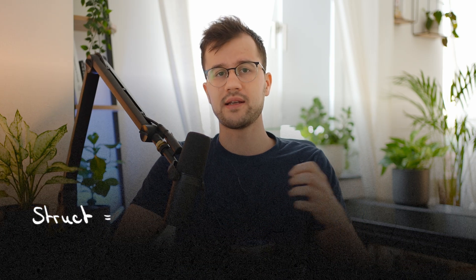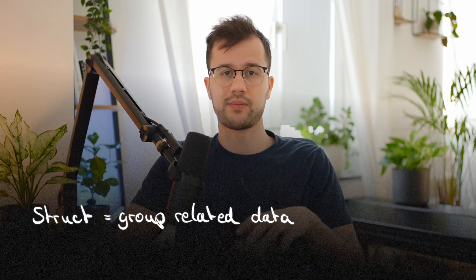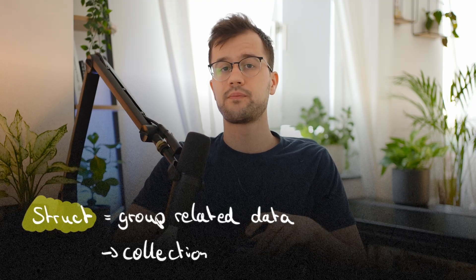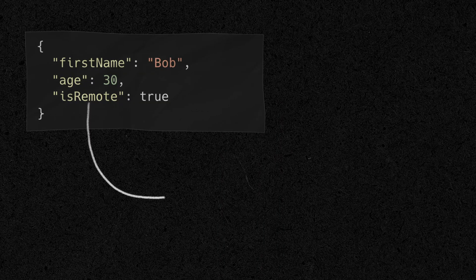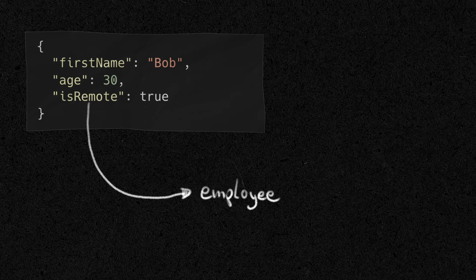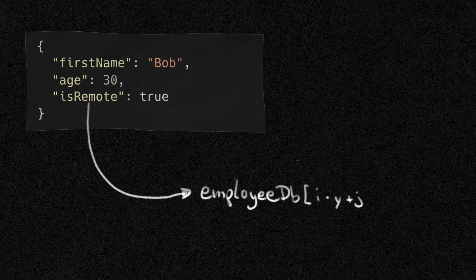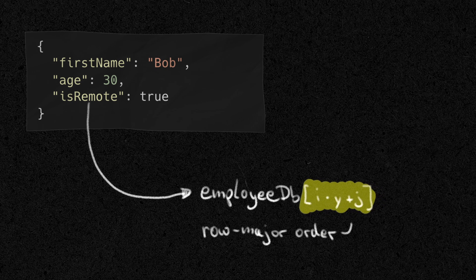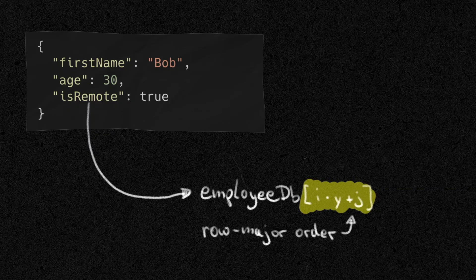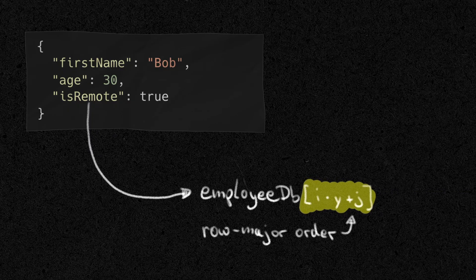The main idea of structs in general is to just group related data together in one data type, so that you only have one single thing that is basically a collection of fields. For example, if you have an employee database, you do not want to specifically store every single field in an array and then index them just to get some information of a specific employee. You want some sort of encapsulation so that you can easily access the first name and last name of an employee without some weird magic indexing structure in an array.